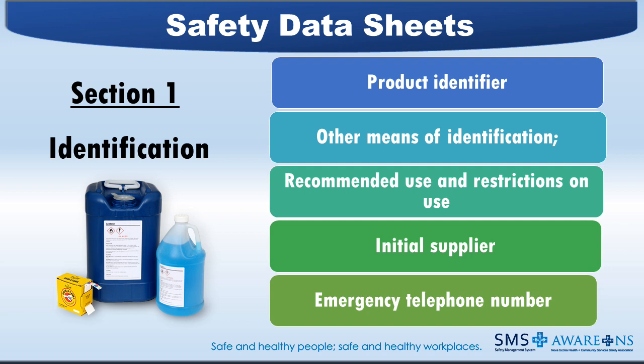Section 1 — Identification provides information on the type of substance or mixture as well as the name of the supplier, recommended uses, and the contact detail information of the supplier including an emergency contact. Requirements consist of Product Identifier, Other Means of Identification, Recommended Use and Restrictions on Use, Initial Supplier Identifier, and an Emergency Telephone Number and any restrictions on the use of that number, if applicable.